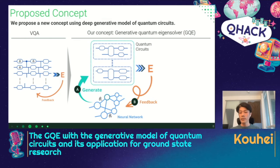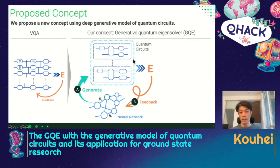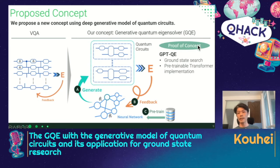As a new concept beyond VQA, we recently came up with a concept called the Generative Quantum Eigensolver, utilizing the generative model of quantum circuits. In GQE, the neural network generates quantum circuits, we calculate the corresponding cost function, and we calculate the feedback to the neural network. By repeating this process, we train the neural network so that it generates quantum circuits having lower cost values. As a proof of concept, we created an algorithm called GPTQE for ground state search — so the cost function is energy — utilizing a pre-trainable transformer implementation.